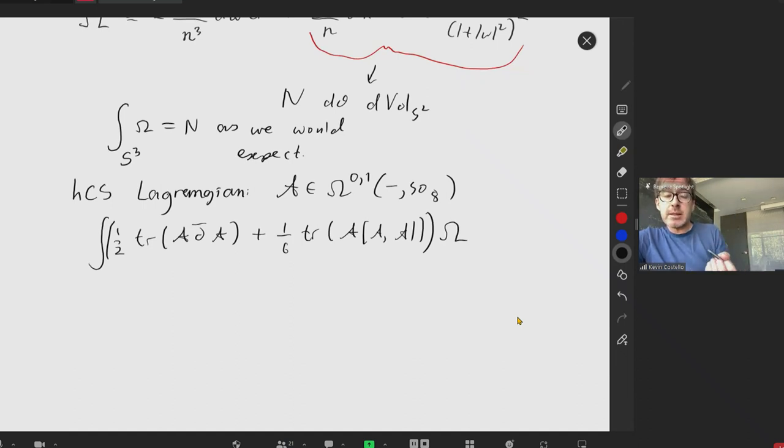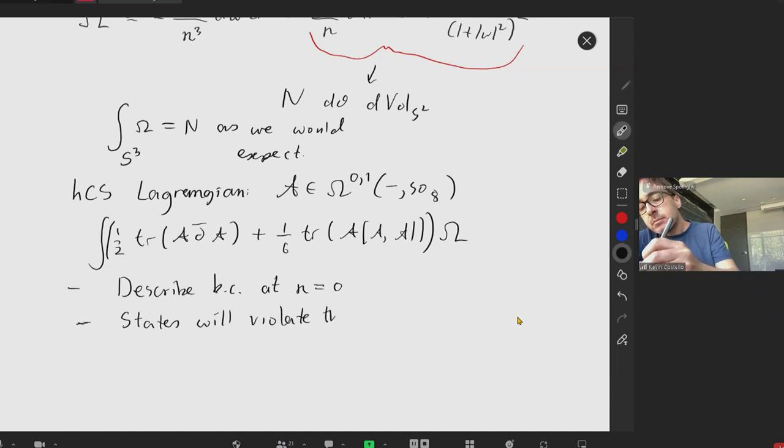So to describe the holographic chiral algebra, we have to first describe boundary conditions, N equals 0. This is on the boundary of our geometry, and then states will violate the boundary condition at some value of z.